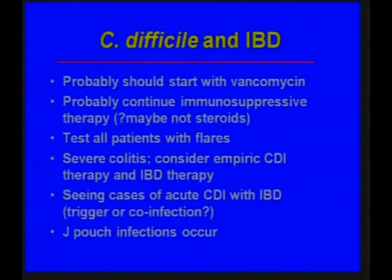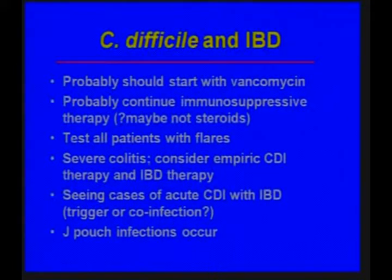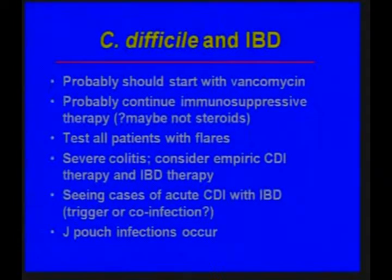Just two months ago, I saw a young woman who had had very mild inflammatory bowel disease on no therapy. She developed C. difficile. We got rid of the C. difficile and she was left with pancolitis now requiring TNF therapy and a 5-ASA. I have to wonder whether that C. difficile infection triggered the extension of her colitis, which was basically asymptomatic. Also importantly, in patients who've had a colectomy, you can get C. diff in a J pouch, and there is a case report from Cleveland where the patient actually died from C. difficile in their J pouch, which had not been recognized.